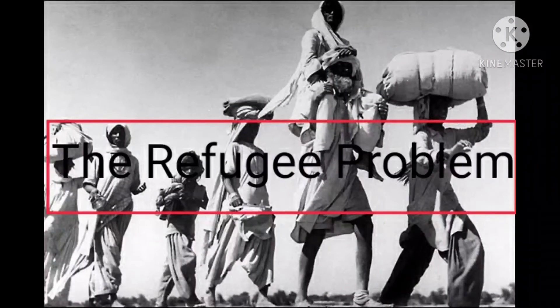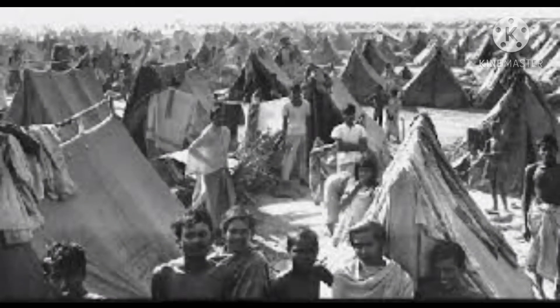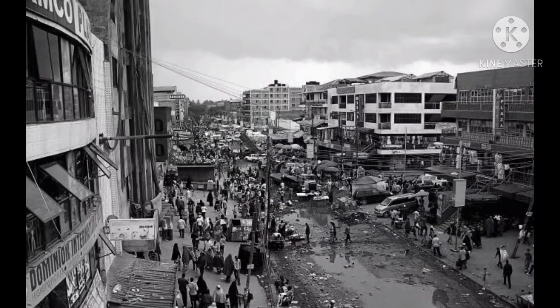The Refugee Problem: The partition of India witnessed a mass migration of people from across the borders. People who came to India were homeless and had been forced to flee with little belongings. Settlement of these people was a major challenge for newly independent India. Relief camps were opened to distribute food and other basic necessities. New townships and colonies were developed to resettle them. Financial help, grants and scholarships were given to refugee students and gradually the displaced people were assimilated into the mainstream of society.